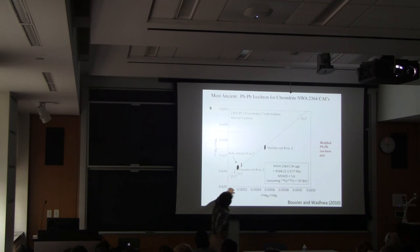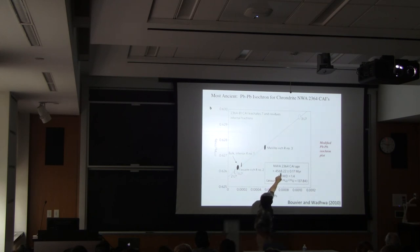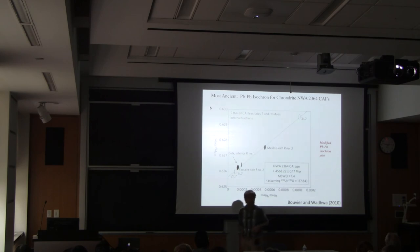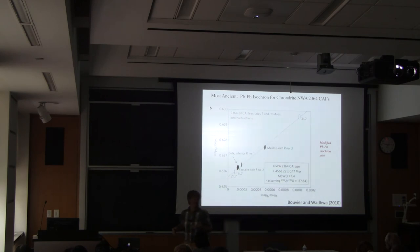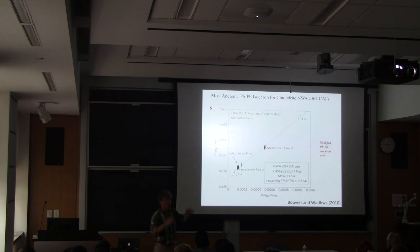The age that they get here is 4.568 billion years. That reflects the age of a bunch of different calcium-aluminum inclusions in these chondrites.